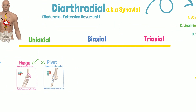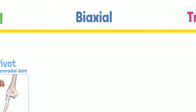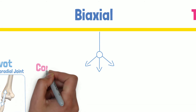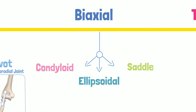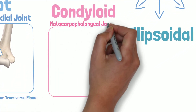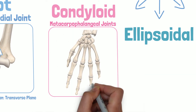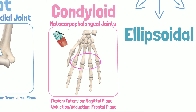Now let's take a look at the biaxial joints. They possess two axes of rotation and move in two cardinal planes. There are three subdivisions: condyloid, ellipsoid, and saddle joints. Examples of condyloid joints are the metacarpophalangeal joints in the hand. It is a union of an oval convex surface with a shallow concave cavity. The motions allowed are flexion and extension in the sagittal plane, and abduction and adduction in the frontal plane.